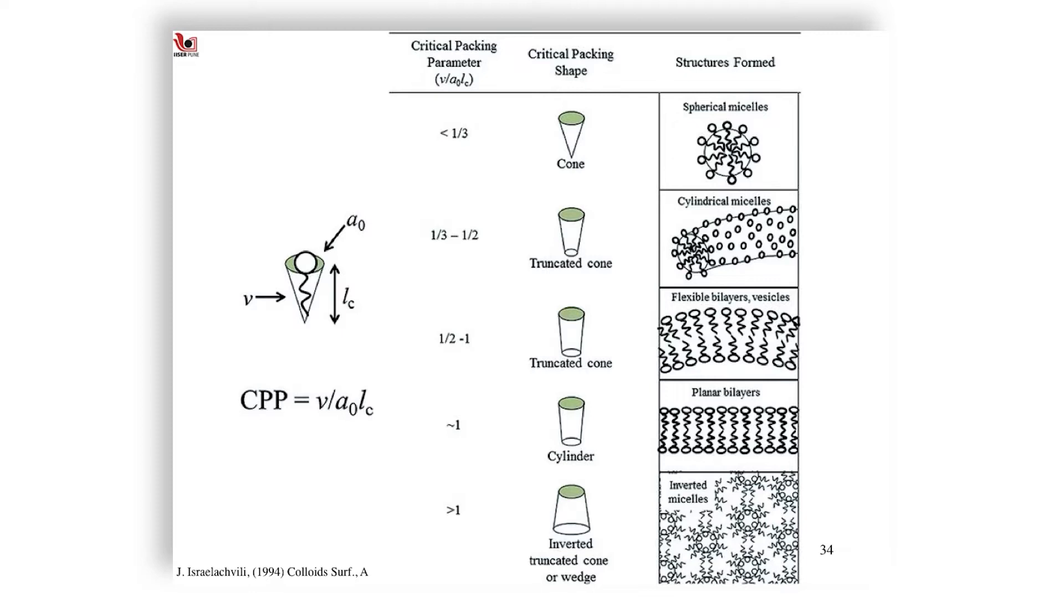Half to one will give you a truncated cone flexible bilayers and vesicles. Approximately one will give you a planar bilayer, so if you have cylinders you will have cylindrical structures that nicely pack into or are more favored to form just simply a flat layer. And inverted truncated cones or wedges form these inverted micelles, which we also called hexagonal phases. This is all theory due to Israelachvili from 1994.